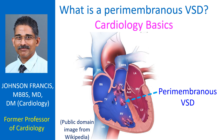VSD usually occurs as a congenital defect, though it can rarely occur in adults after a myocardial infarction due to rupture of the ventricular septum. If the VSD is large, high pulmonary blood flow increases the amount of blood returning to the left atrium and left ventricle through the pulmonary veins. This volume overloading of the left ventricle can lead to heart failure, as the immature left ventricle of the infant has more mitochondria than contractile elements.